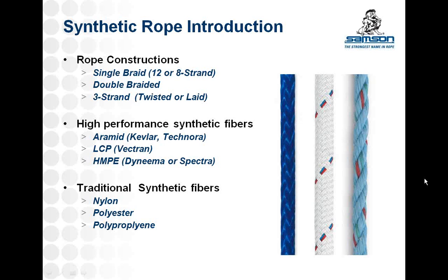Synthetic ropes come in a variety of constructions, but the most common are single braid, double braid, or three strand. As we can see on the left, we have a 12-strand single braid. In the middle there is a double braid, which consists of a braided core with a protective cover braided over it. Three strand or laid ropes, shown on the right, are still frequently used, but they're usually made of lower modulus fibers such as nylon, polyester, or polypropylene.